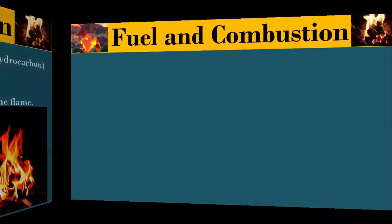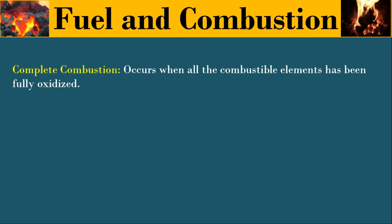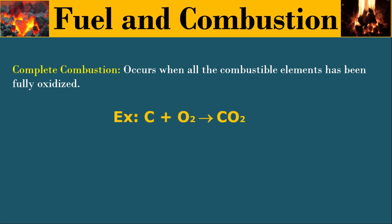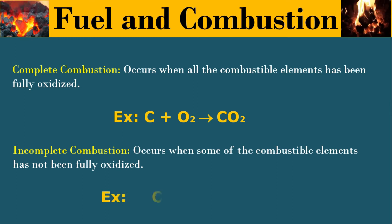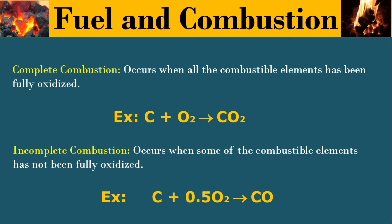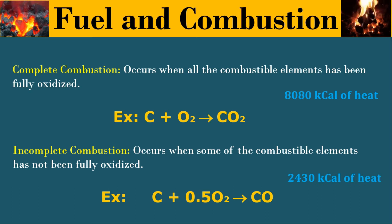What is meant by complete combustion and incomplete combustion? Complete combustion means supplying the proper amount of oxygen for combustion. If 1 kg of fuel needs 1 kg of oxygen, we have to supply exactly 1 kg of oxygen — that is complete combustion. For example, carbon plus oxygen gives carbon dioxide (CO2). For incomplete combustion, insufficient oxygen is supplied — for example, only 0.5 kg of oxygen — resulting in carbon monoxide (CO). During complete combustion, 8080 kJ of heat is liberated, whereas incomplete combustion liberates only 2430 kJ. This loss of heat energy is why we always aim for complete combustion.